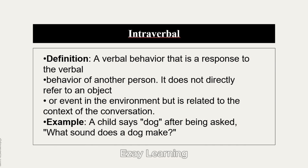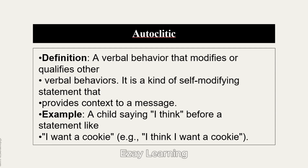Autoclitic is a verbal behavior that modifies or qualifies other verbal behavior. It is a kind of self-modifying statement that provides context to a message. For example, a child saying 'I think' before 'I want a cookie' is an autoclitic. This also includes words like 'I believe' or 'most people think' — essentially you are modifying or qualifying a statement and providing context to the message.